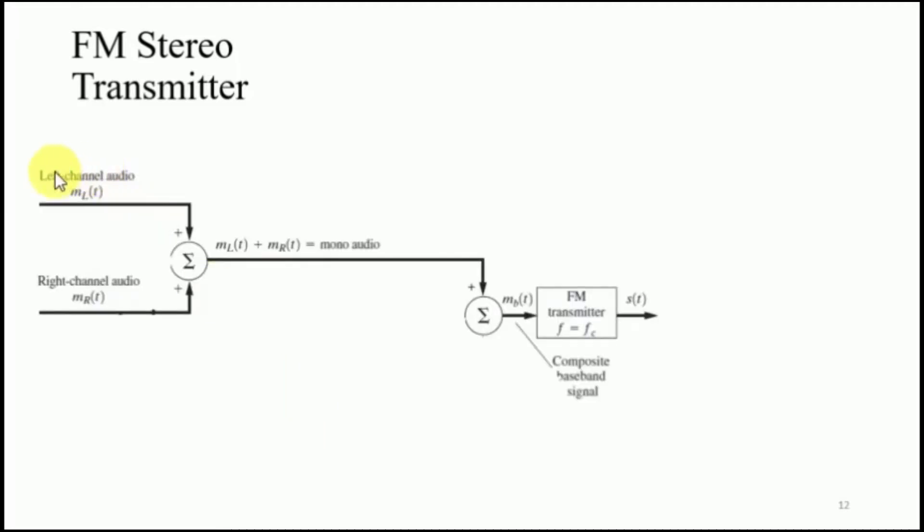We have a left channel audio which is ML of T and a right channel audio, MR of T. Now, we add them together, then it will become ML of T plus MR of T. Note that the audio for the left channel is a low frequency content. Similarly, for the right is a low frequency content.